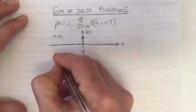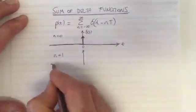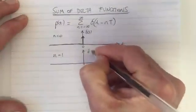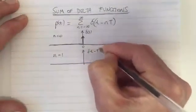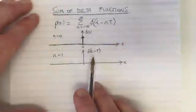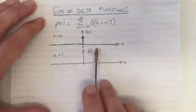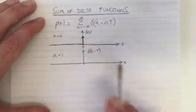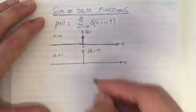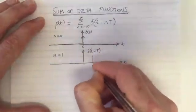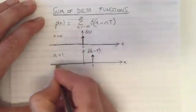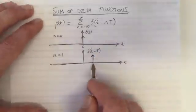What about the term n equals 1? That's also a function in this summation. It's delta of t minus capital T. When the thing in the brackets equals zero is where this is going to be. When little t equals capital T, we're going to have a delta. That is a function. It's zero everywhere except at that time.